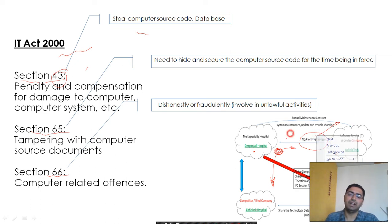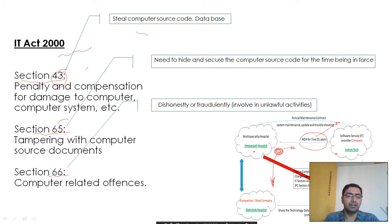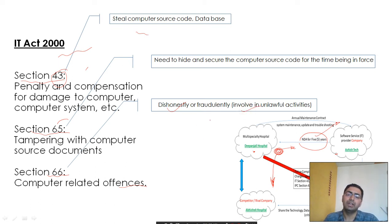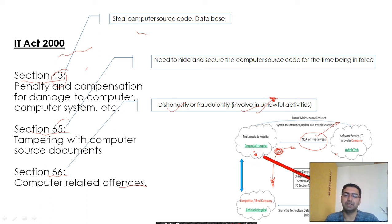Section 65 is also applicable because Mr. VJ had signed an NDA with Ashish Tech, committing to maintain the secrecy of the source code and data received from Dipanjali for five years, but he breached that contract. Section 66 is also applicable as there is a computer-related offense — dishonesty was involved, and New Tech engaged in unlawful activity by sharing and providing the patented system of Dipanjali Hospital to Abhishek Hospital.